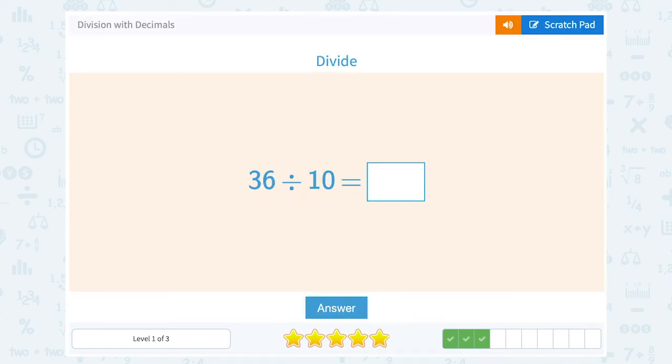36 divided by 10. If I make this one place value smaller, that would be 3.6.